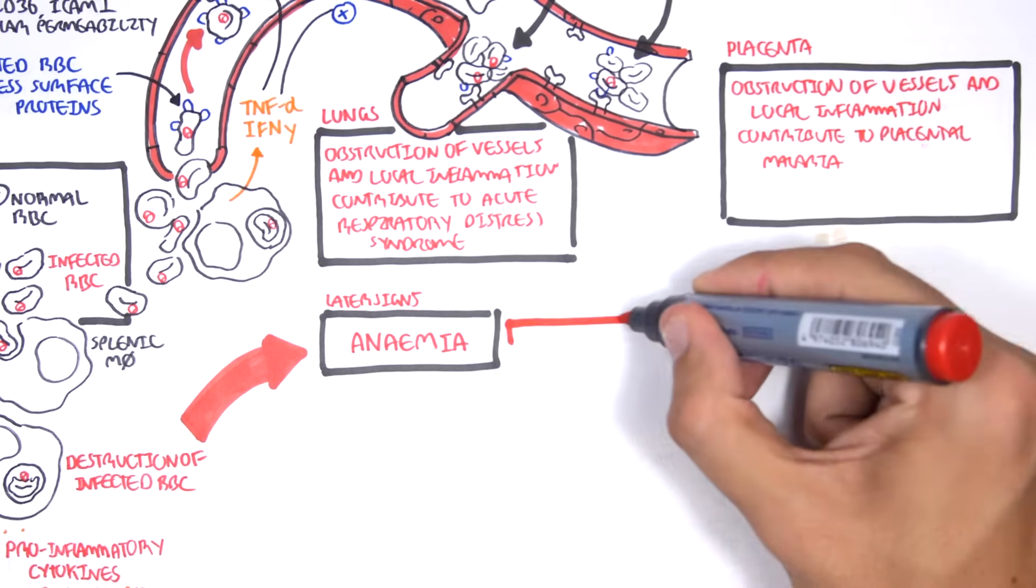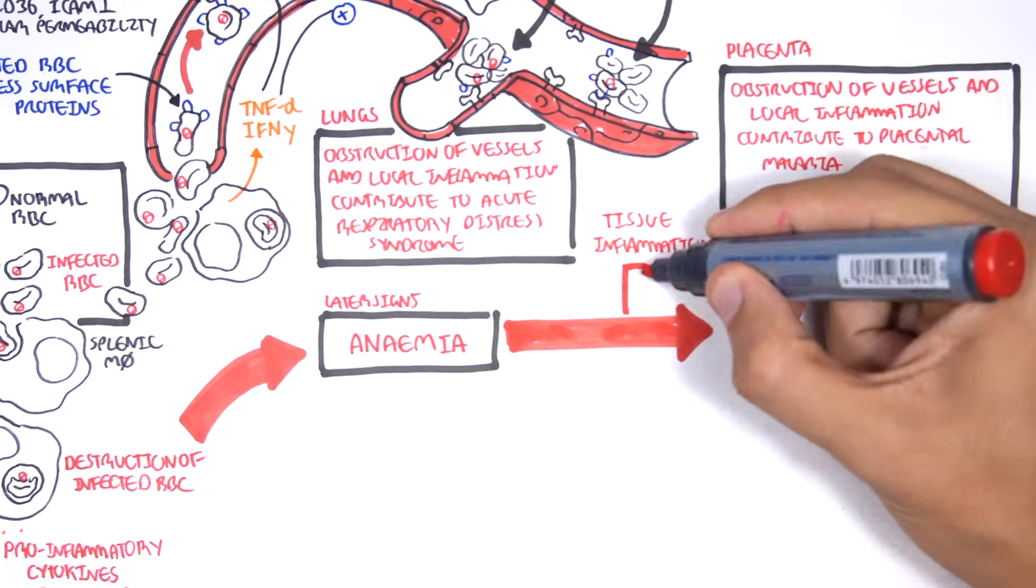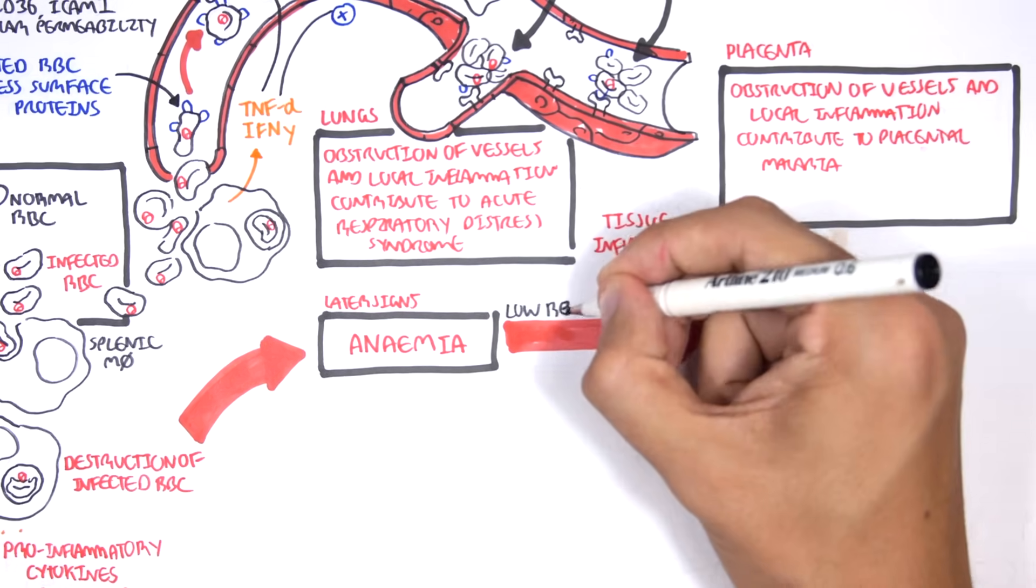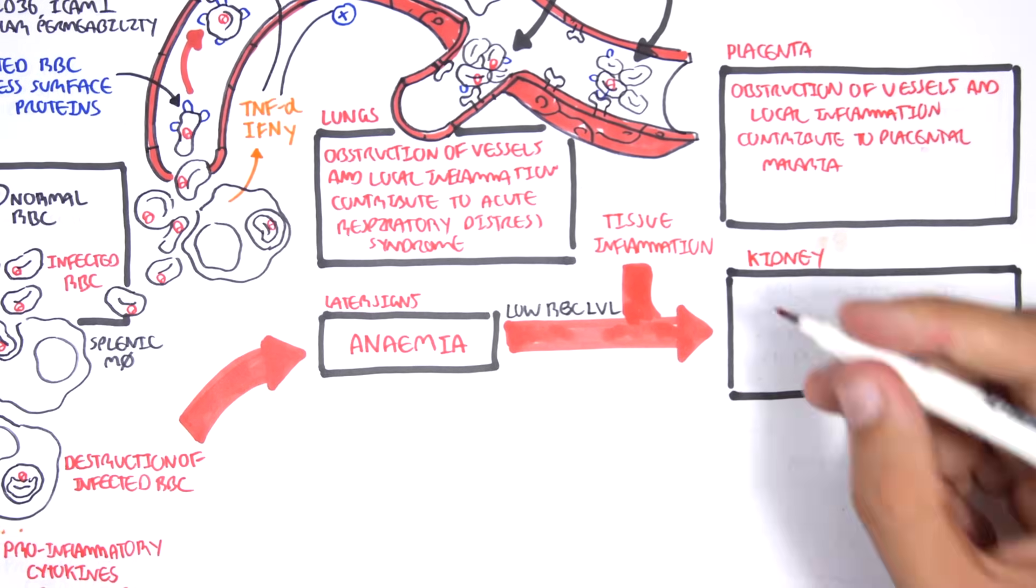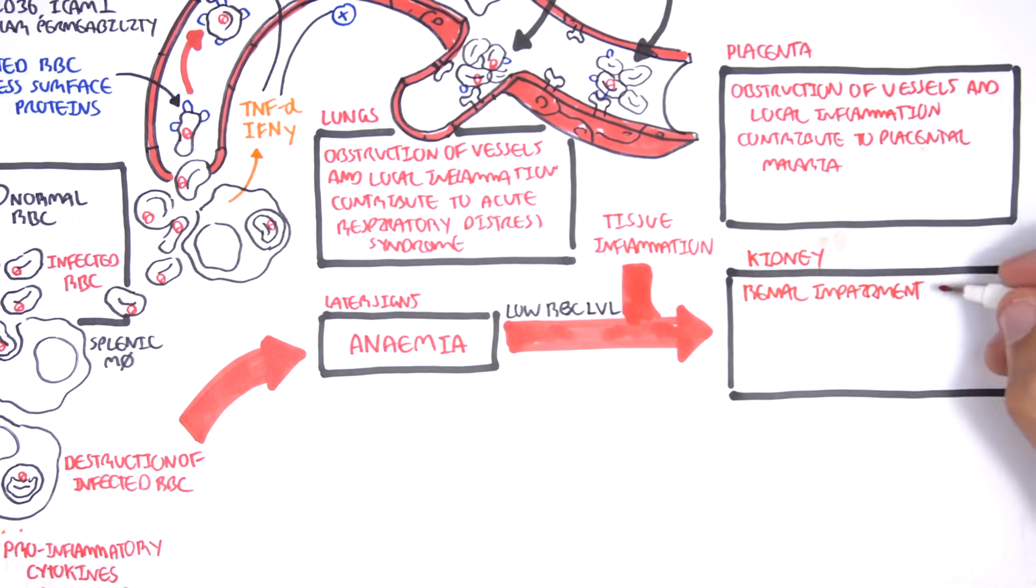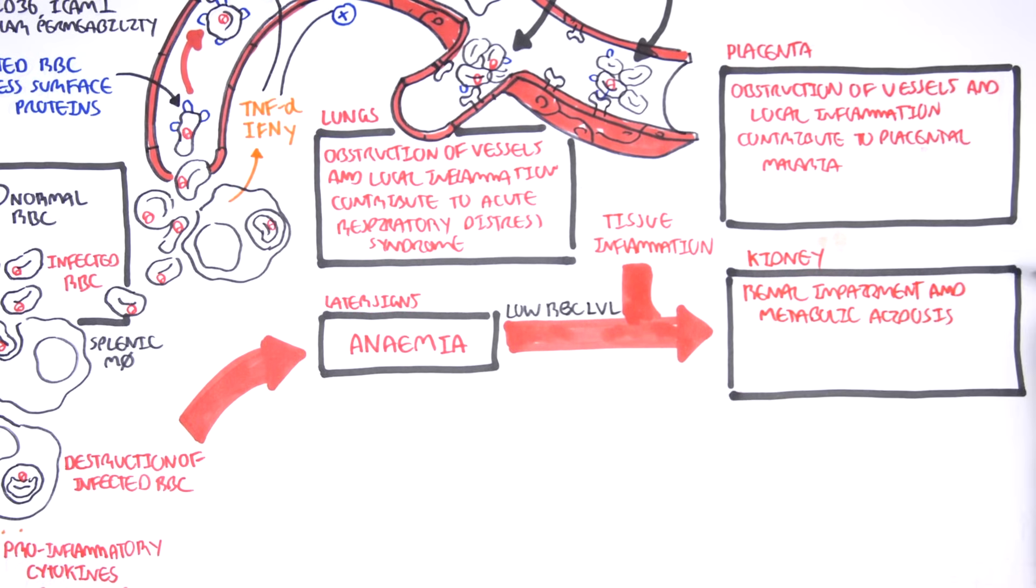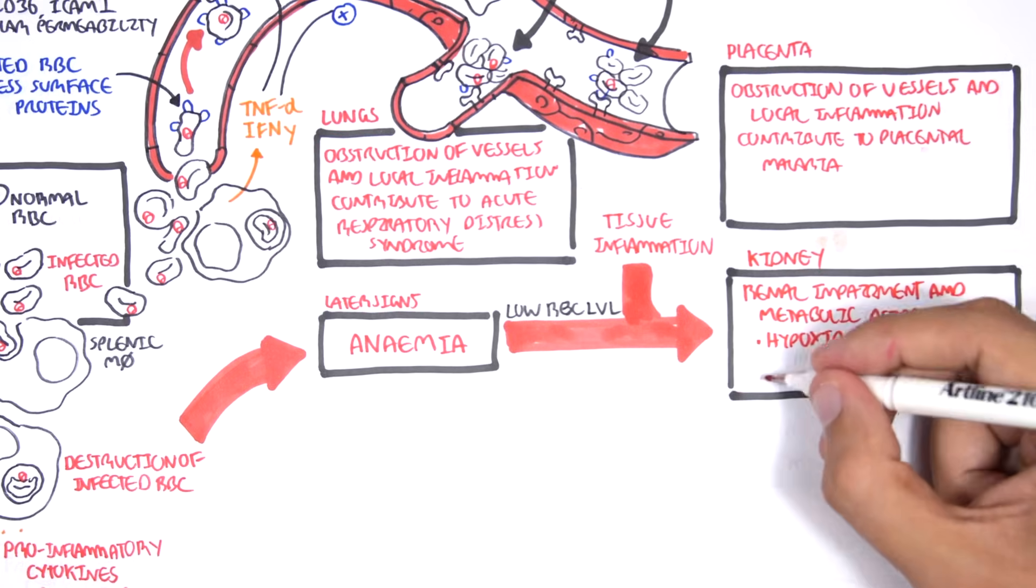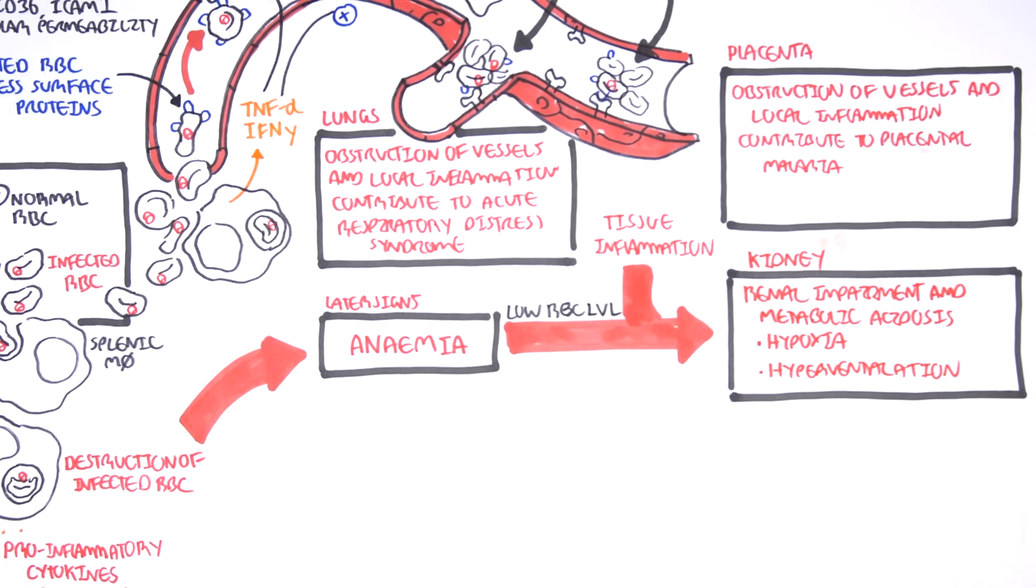Finally, the kidneys. Kidney problems can be caused by anemia and the tissue inflammation and coagulation process. And this will lead to renal impairment and metabolic acidosis. And this can all cause hypoxia and hyperventilation due to the increase in acidity.